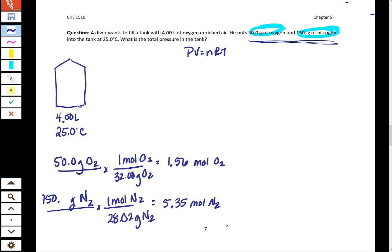And so what we can do is again we're searching for pressure so we're going to rearrange this and we can plug in our 1.56 plus 5.35 moles and then add our 0.0821 liters atmospheres mole Kelvin and our 298.2 Kelvin and the volume of 4 liters.